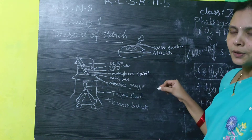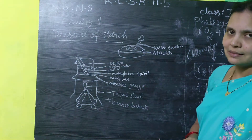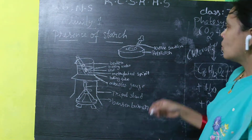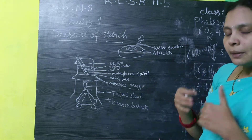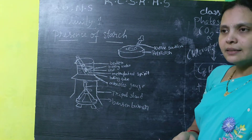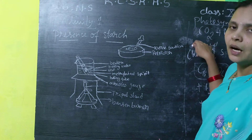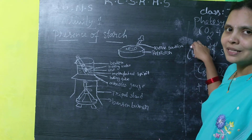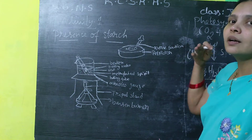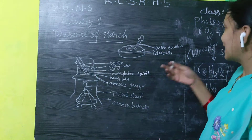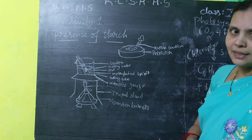So the plants are called autotrophs, as we have already discussed in the previous classes. All animals and human beings are heterotrophs — they depend directly or indirectly upon plant products for their food materials.